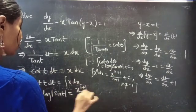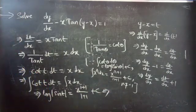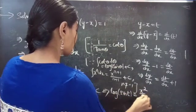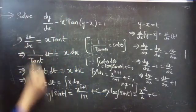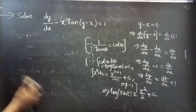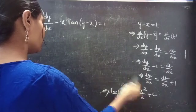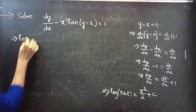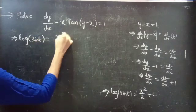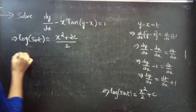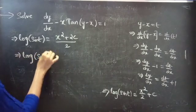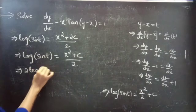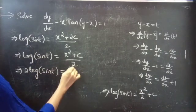We get log|sin(t)| equals x^2/2 plus c. This can be written as log|sin(t)| equals (x² + 2c)/2. Since c is a constant, we can write 2c as c. Then log|sin(t)| equals (x² + c)/2, so 2·log|sin(t)| equals x² plus c.